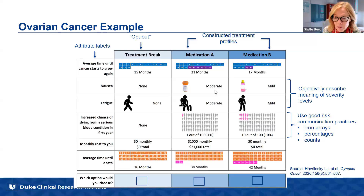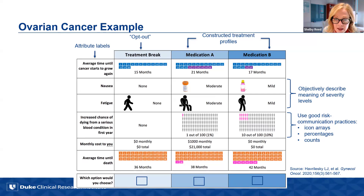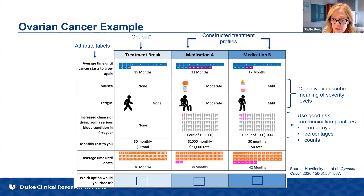For people who are newer to this field, this is representative of a typical choice task layout where attribute level labels are shown in the left-hand column. We have a clearly described opt-out column — described as no treatment or treatment break, whatever is appropriate for the decision context — and our constructed treatment profiles shown as Medication A and Medication B. We have noted the incremental gains in progression-free survival and overall survival with different colors, used graphics sparingly to differentiate levels of nausea and fatigue, and used icon arrays to help people understand different risk levels.